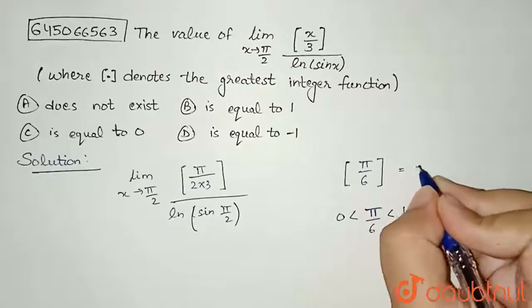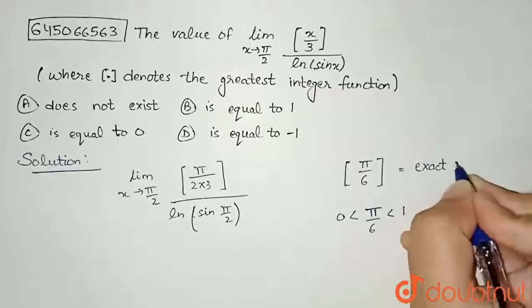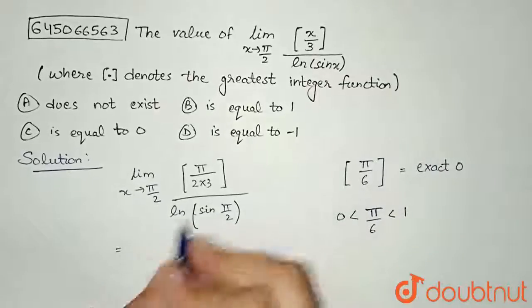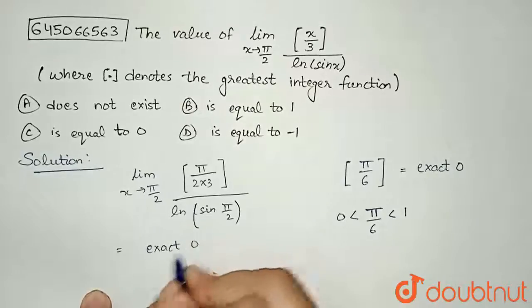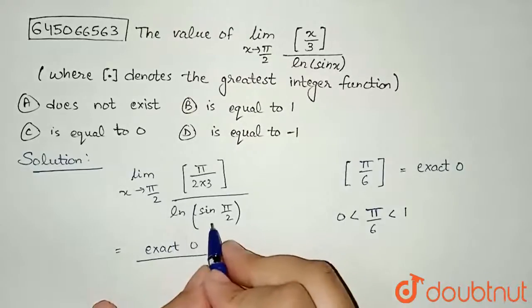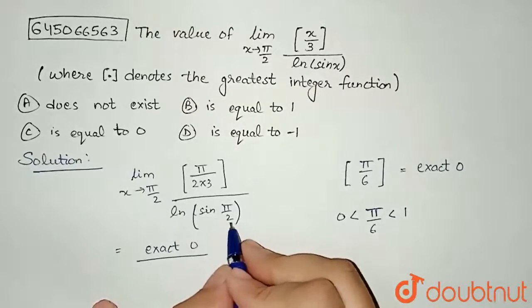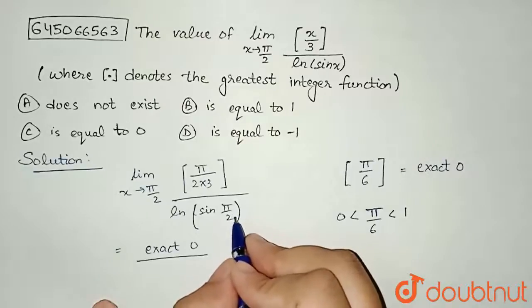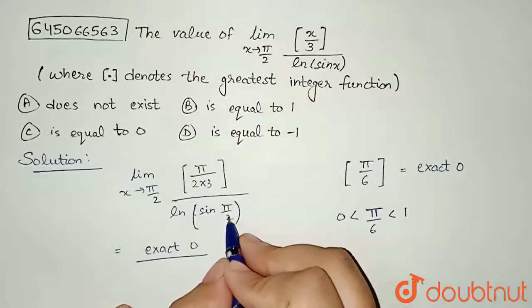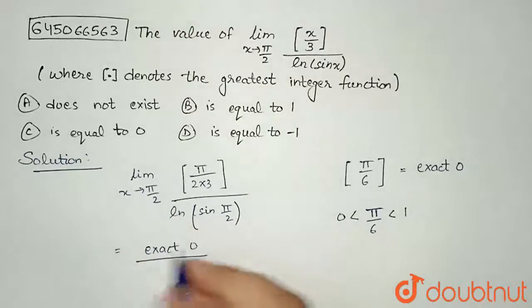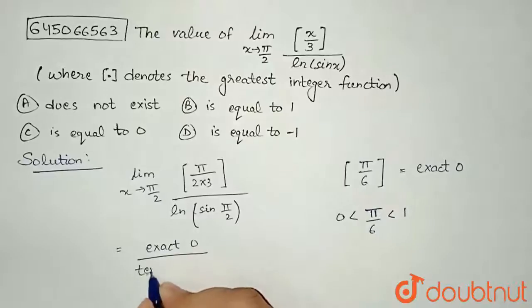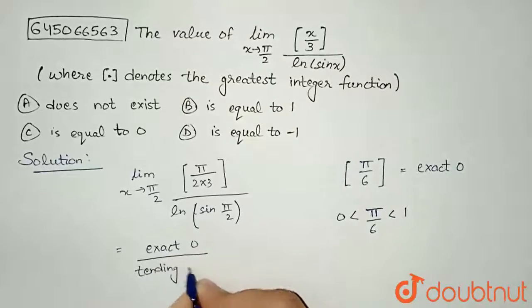So this is equal to exactly 0, not tending to 0. My limit has changed into exactly 0. And if I talk about ln of sin(π/2), then what is the value of sin(π/2)? It is 1, and ln(1) is 0, but x here tends to π/2.